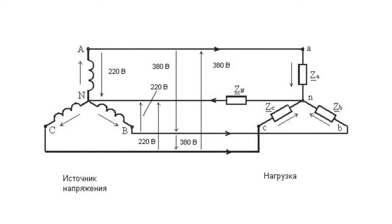Current-using equipment can be connected like this. The inputs of the coils are usually represented by Latin letters A, B, and C. The ends of the coils are represented by letters X, Y, and Z.